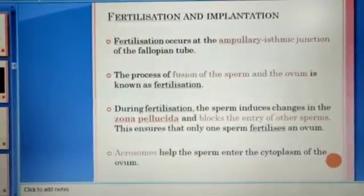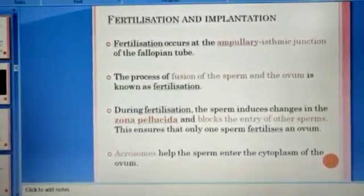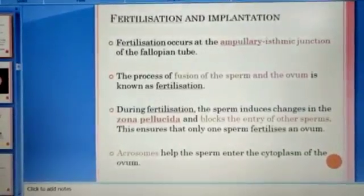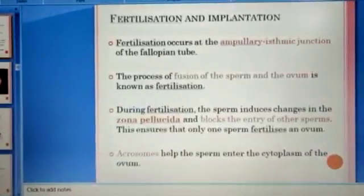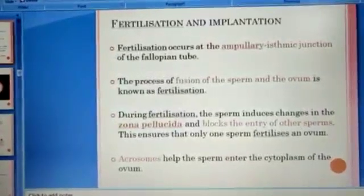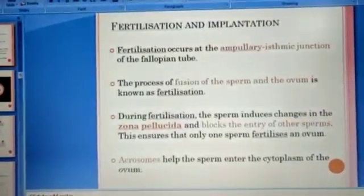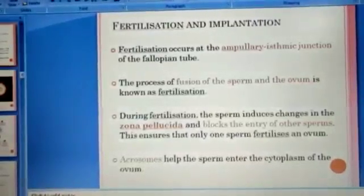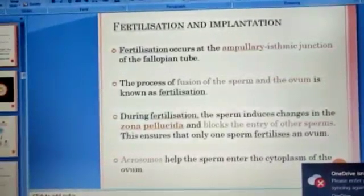You already know the different parts of the female reproductive system: a pair of ovaries, a pair of fallopian tubes (also called oviducts), uterus, vagina, and cervix. Fertilization takes place in the fallopian tube or oviduct. More specifically, fertilization occurs at the junction between the ampulla and the isthmus — these are two different parts of the oviduct.